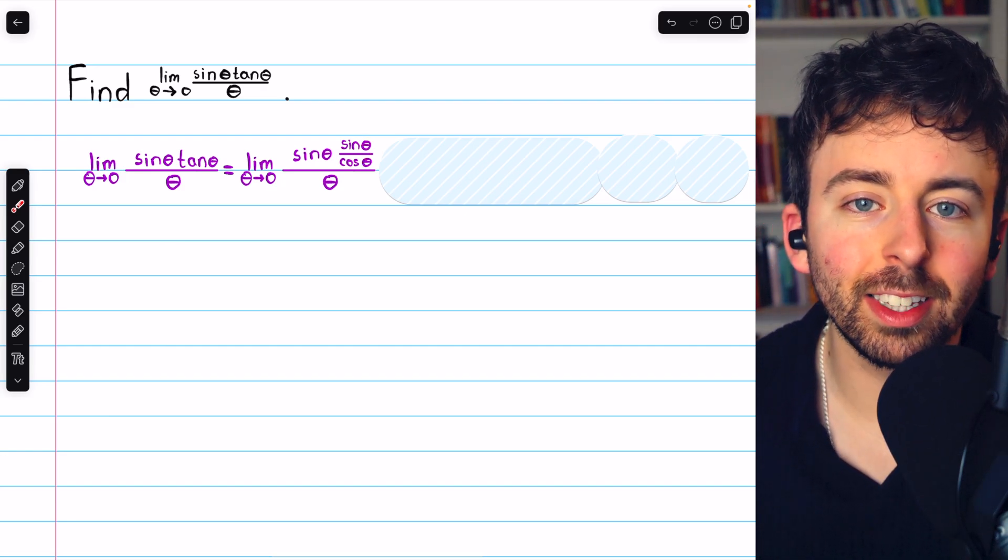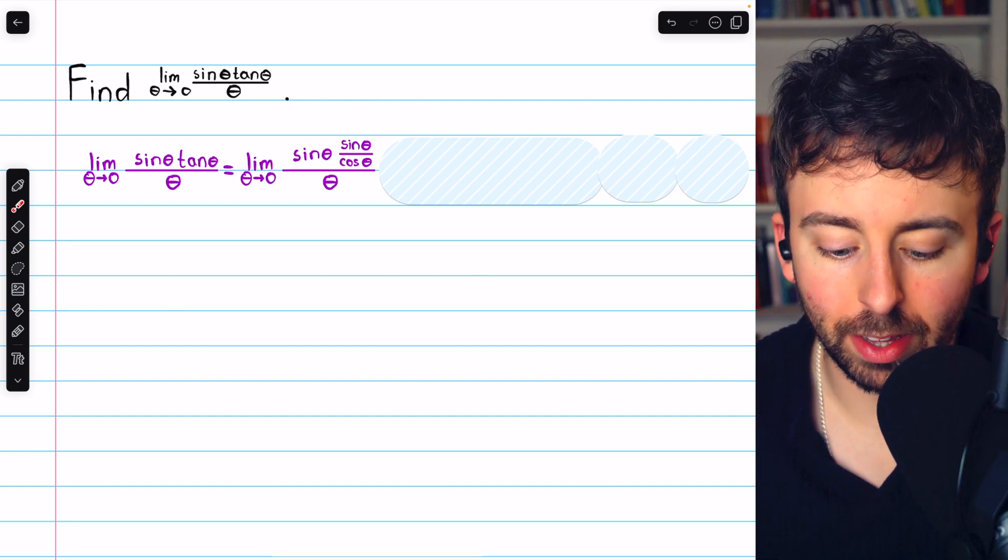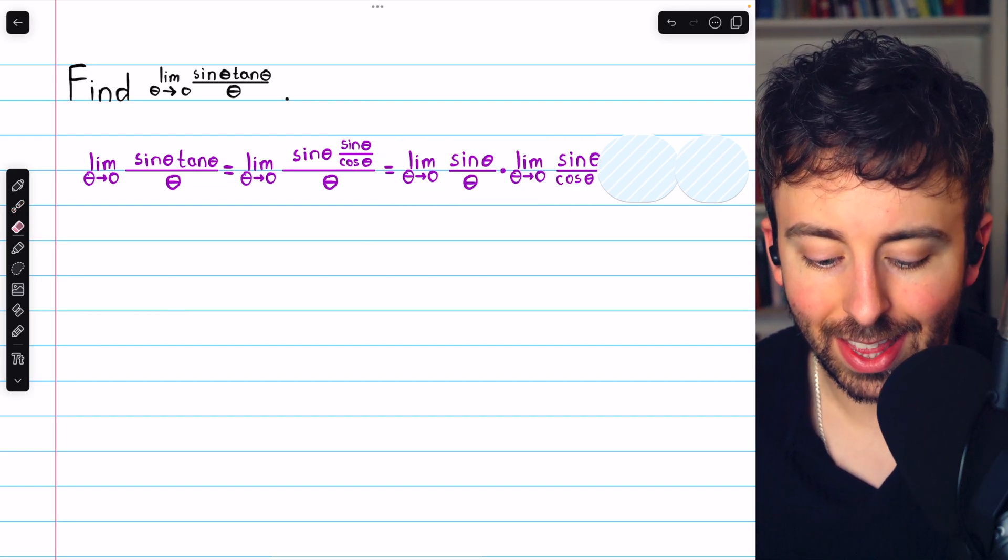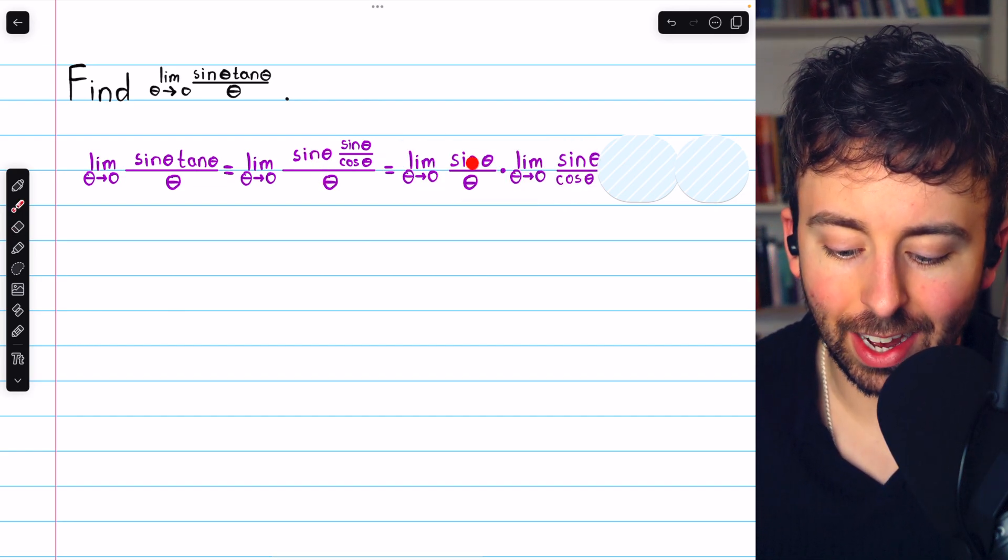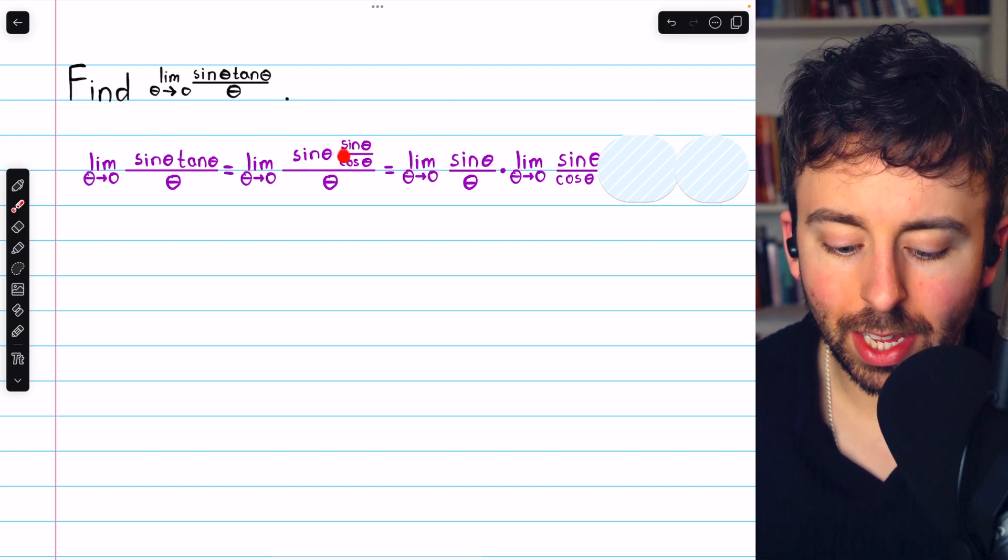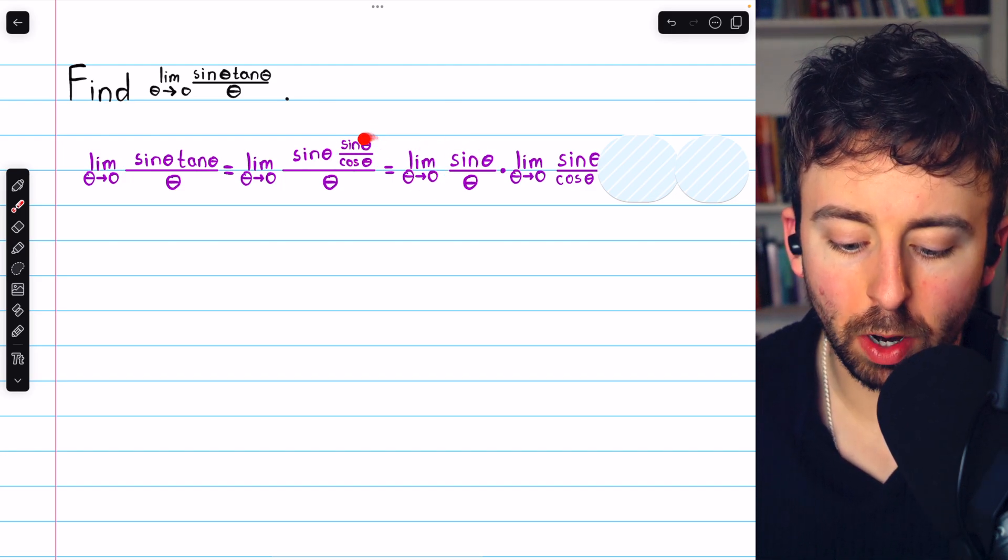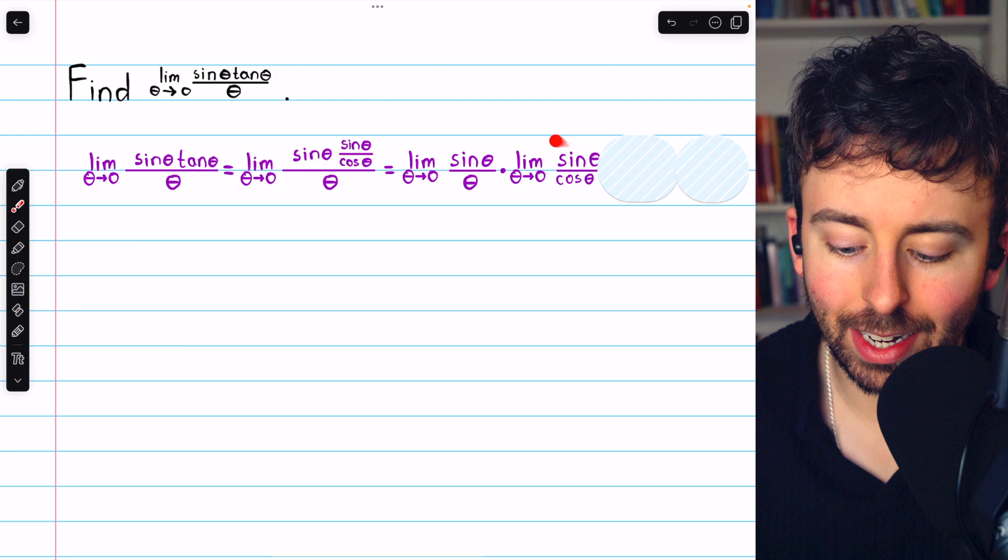Then it's easy to split this limit up as the product of limits. So we can split it up like this, sine theta over theta in its own limit, and then the tangent function, which we rewrote as sine over cosine in its own limit.